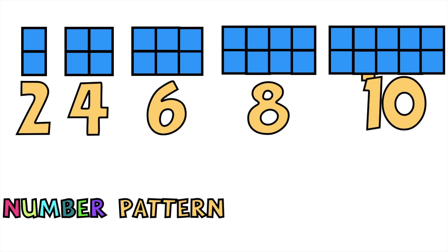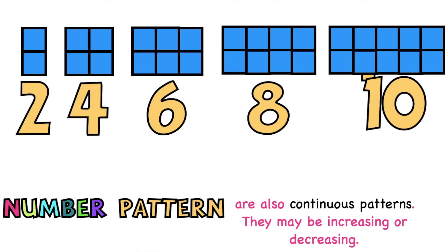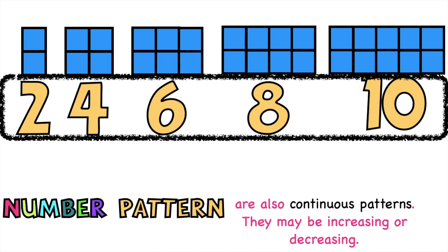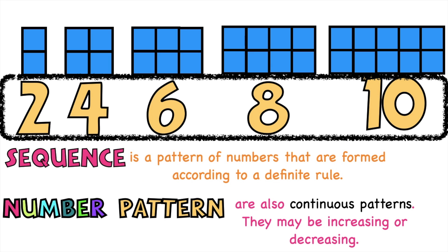This pattern is what we call the number pattern. Number patterns are also continuous patterns. They may be increasing or decreasing. The sequence one, two, four, six, eight, and ten is what we call a sequence. A sequence is a pattern of numbers that are formed according to a definite rule.